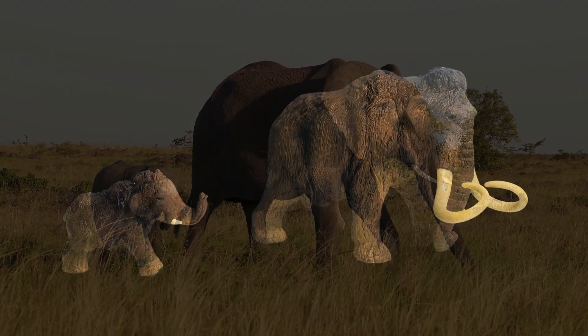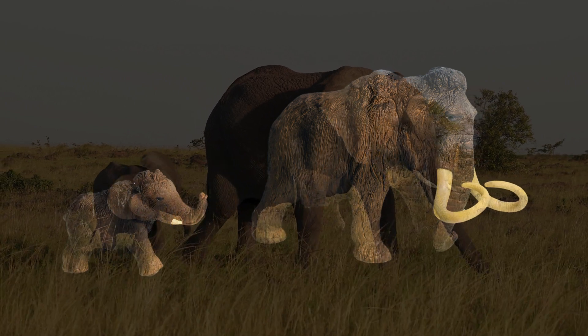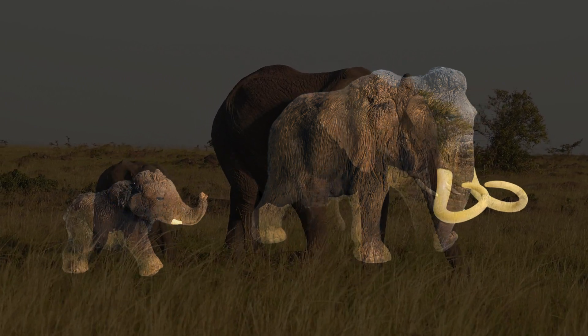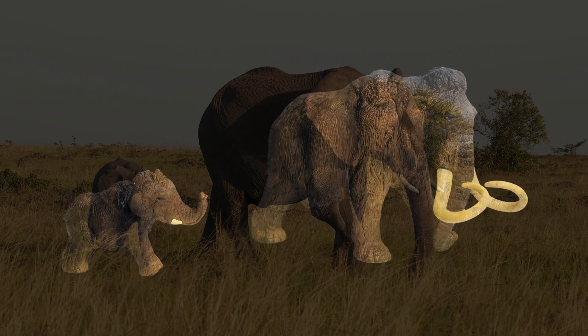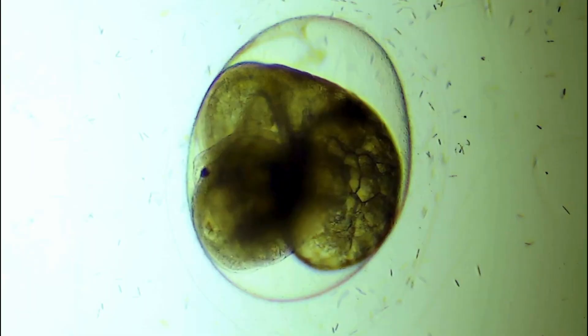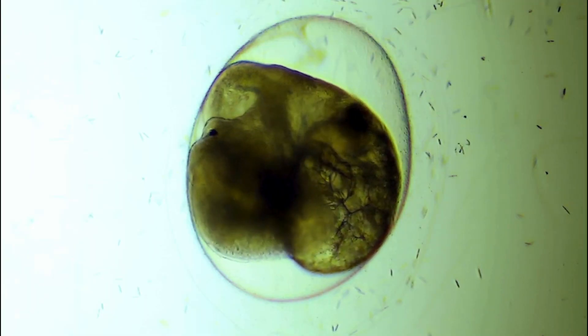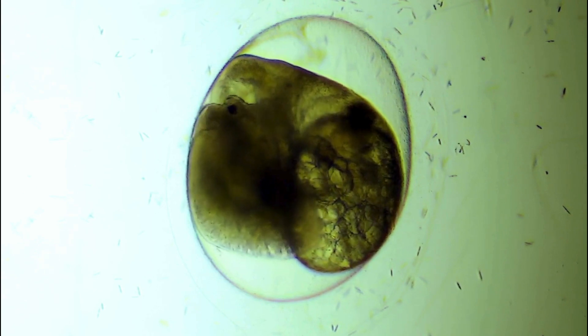The team is now leveraging CRISPR's cutting-edge gene editing capabilities to modify Asian elephant cells. These edited cells will eventually be placed into an egg cell, with the resulting embryo implanted into an elephant to carry and give birth to a baby mammoth.